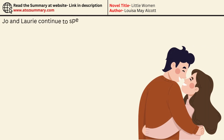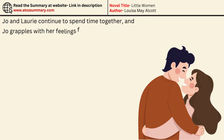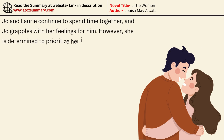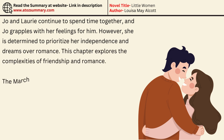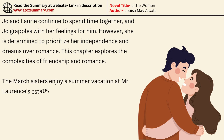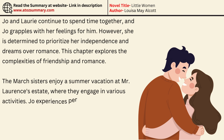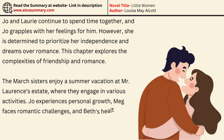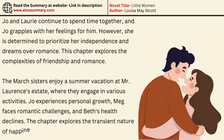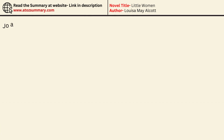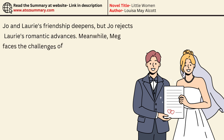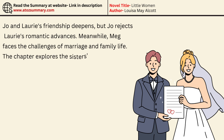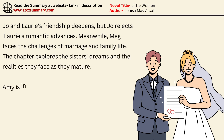Jo and Lori continue to spend time together, and Jo grapples with her feelings for him. However, she is determined to prioritize her independence and dreams over romance. The March sisters enjoy a summer vacation at Mr. Lawrence's estate, where they engage in various activities. Jo experiences personal growth, Meg faces romantic challenges, and Beth's health declines. Jo and Lori's friendship deepens, but Jo rejects Lori's romantic advances. Meanwhile, Meg faces the challenges of marriage and family life, and the chapter explores the sisters' dreams and the realities they face as they mature.